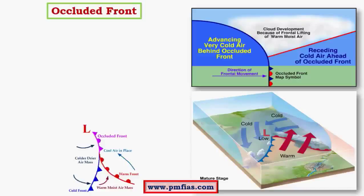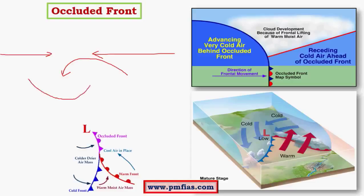The last kind of front is the occluded front. This is the most important front because it is the reason behind temperate cyclones. An occluded front is a front where instead of air masses pushing against each other, we have a different mechanism where the air masses converge. Convergence happens in regions where there is a low pressure system.